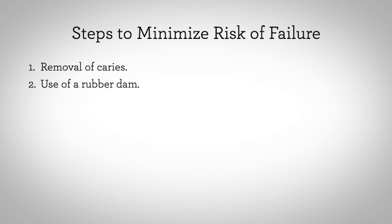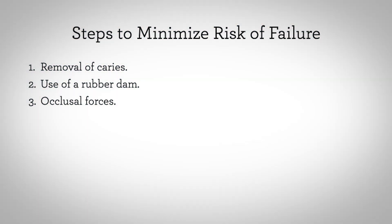Number two, use of a rubber dam minimizes recontamination during restoration. Number three, evaluate the existing periodontal support and also the amount of occlusal forces the tooth will bear when deciding on the final restoration. The location of a tooth in the arch matters, as terminal teeth — especially those supporting a fixed or removable partial denture — are at a greater risk of fracture. Number four, there are contradicting studies regarding whether or not a post is beneficial in restoring an ETT. Newer studies advise that a post is almost never beneficial. There's also controversy about the bleaching of ETTs due to the risk of future cervical resorption. You, the restoring dentist, should make decisions on each individual case using evidence-based principles.